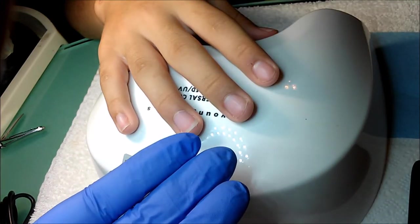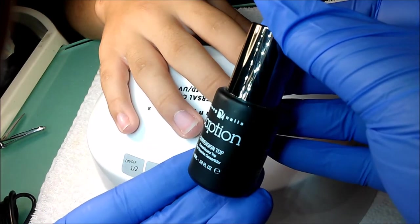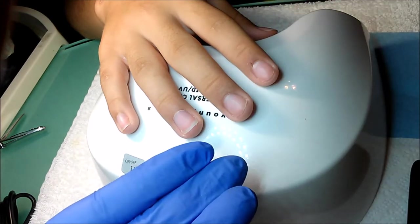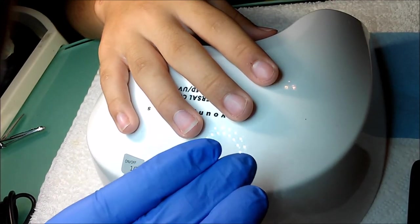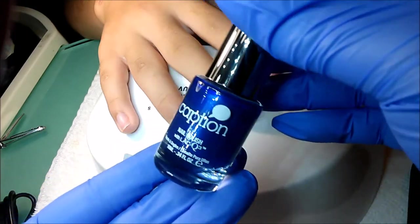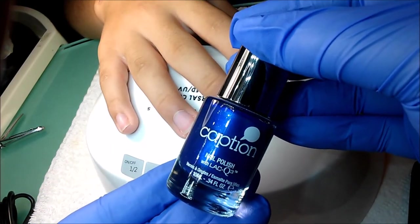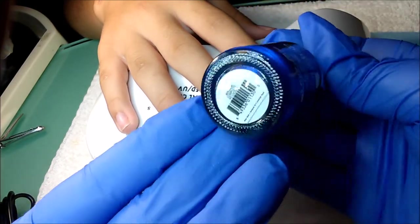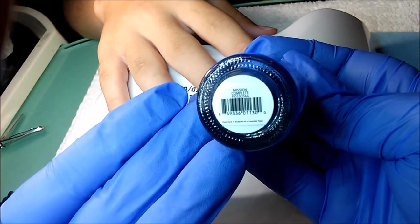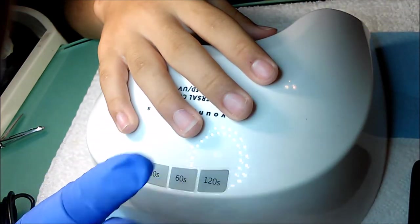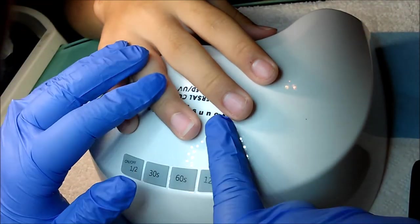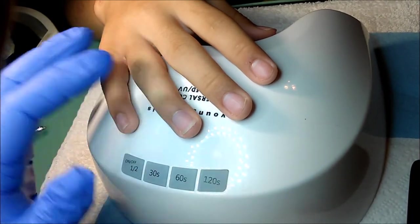So here I have my base coat and my top coat. These are both the caption conversion system. And here is the polish that I will be using today. It is a normal lacquer from Young Nails. And the color is Mission Complete. It's a very beautiful royal blue with a shimmer to it.